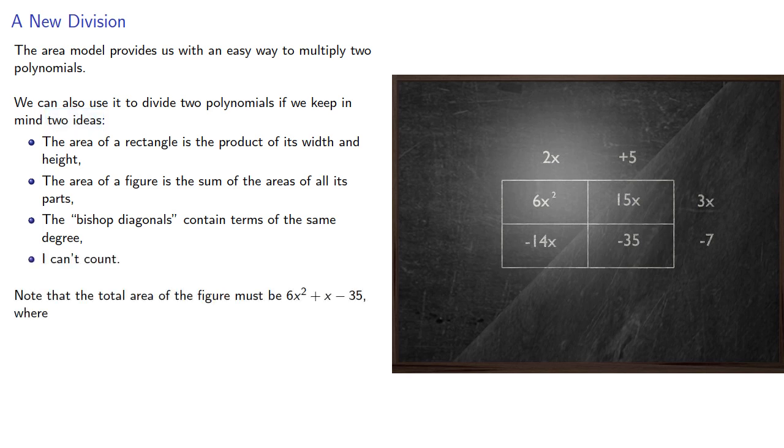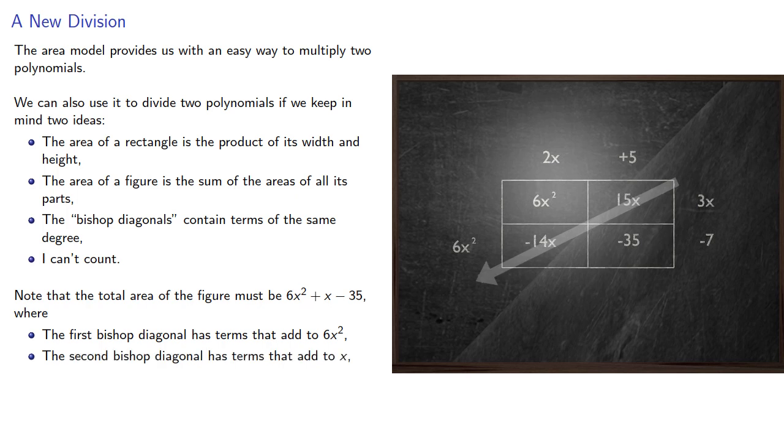Note that the total area of the figure must be 6x squared plus x minus 35, where our first bishop diagonal adds to 6x squared. This second bishop diagonal has terms that add to x, and this third bishop diagonal, just this last square, has terms that add to negative 35.